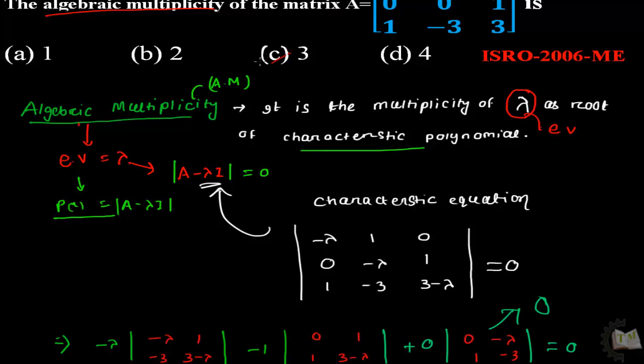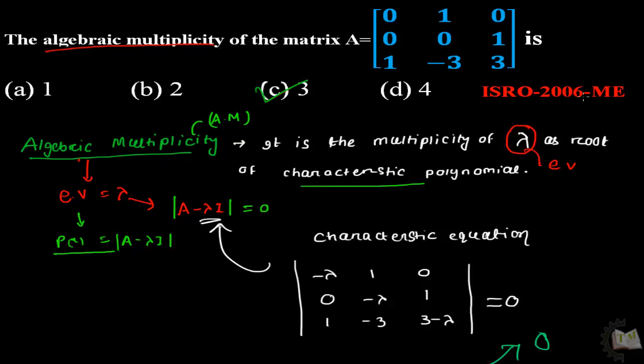In this case, algebraic multiplicity is 3, and your answer will be C. It is a very important question. Practice this type of question because it is a new concept in algebra.